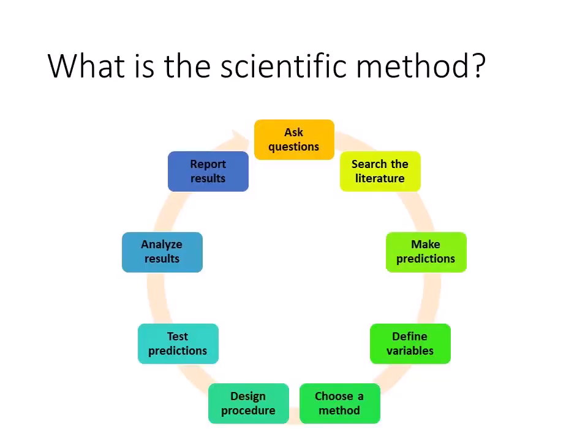This figure depicts the steps of the scientific method. The first step is to ask questions. Ideas for research in social psychology come from everywhere: personal experiences and observations, events in the news, and research from other disciplines.